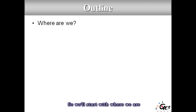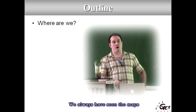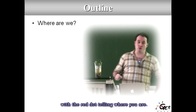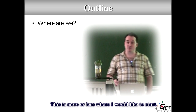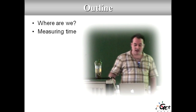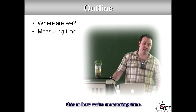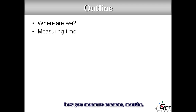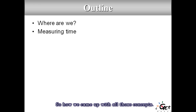We'll start with where we are — like those maps in a subway with a red dot telling you where you are. Then there's something very important in astronomy: how we measure time. Time is essential in our life. I will tell you how we measure days, seasons, months, and years — how we came up with all those concepts.